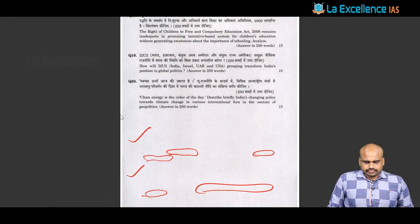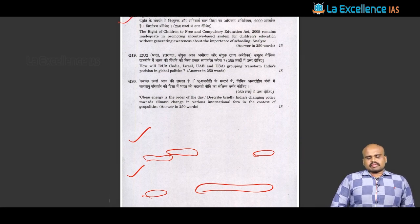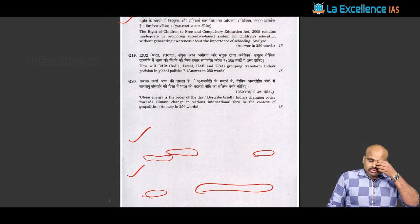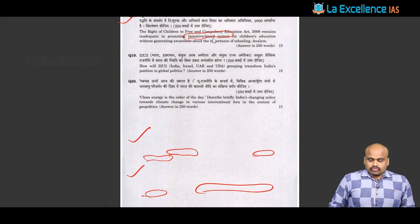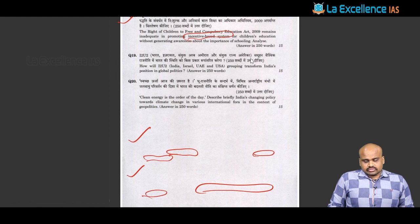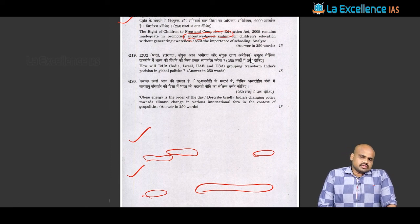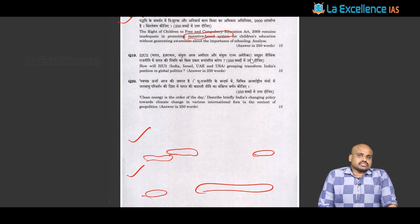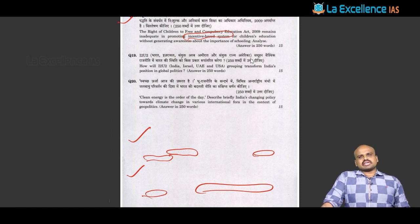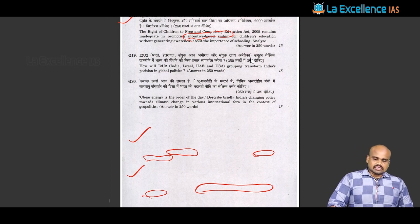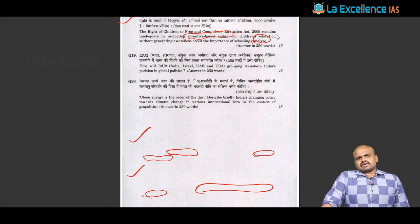Question 18 is about the Right of Children to Free and Compulsory Education Act 2009, which remains inadequate in promoting an incentive-based system for children's education without generating awareness about the importance of schooling. It ensures certain provisions like compulsory education and reservations in schools, but does not address the incentive-based system or awareness about schooling. The question asks for a detailed critical evaluation of the Act and its limitations.